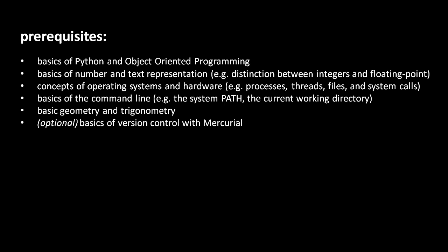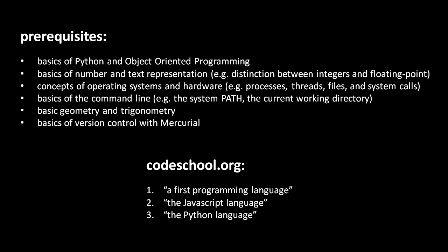Now, if you're totally new to programming, you can work your way through the videos at codeschool.org, but that's quite a lot of material. So if you just want to do the bare minimum, you should watch the videos called A First Programming Language, The JavaScript Language, and The Python Language, in that order. The JavaScript video is necessary not because we're going to use JavaScript, but because the Python video won't make sense without it. And of course, if you need help with any material in this series or the Codeschool series, you can post questions in the Codeschool discussion group, the link to which is on the Codeschool front page.